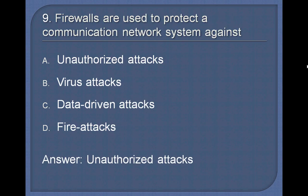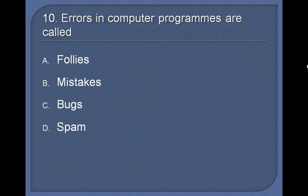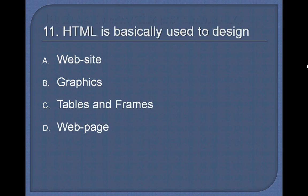Question 10. Errors in computer programs are called: Follies, Mistakes, Bugs, or Spam? Answer: Bugs.